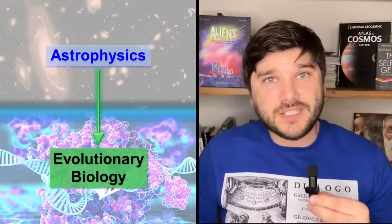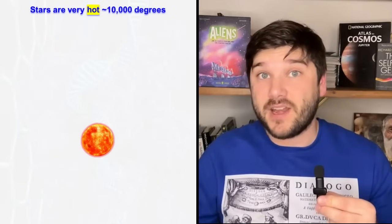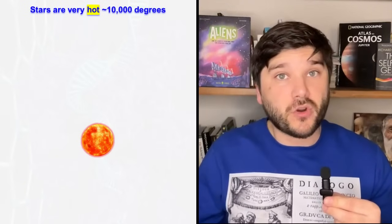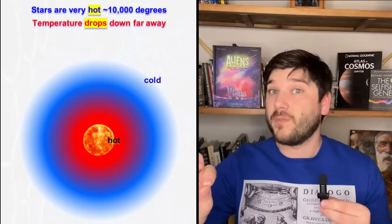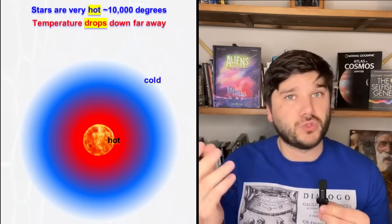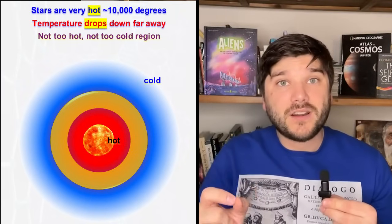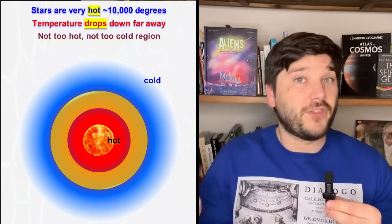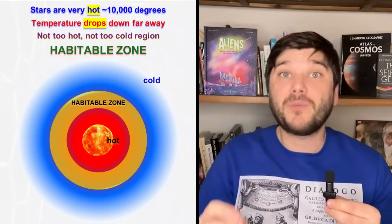So why did San-Ti leave their own planet and went to Earth? Here we have to slowly transition from astrophysics to evolutionary biology. Every star is a very hot object. The temperature of a star is between 5 and 10,000 degrees. As we move away from a star, the temperature around decreases and eventually drops down to zero degrees. But there is a region around every star where it is neither not too hot and not too cold. This region has a ring-like shape and it is called the habitable zone.